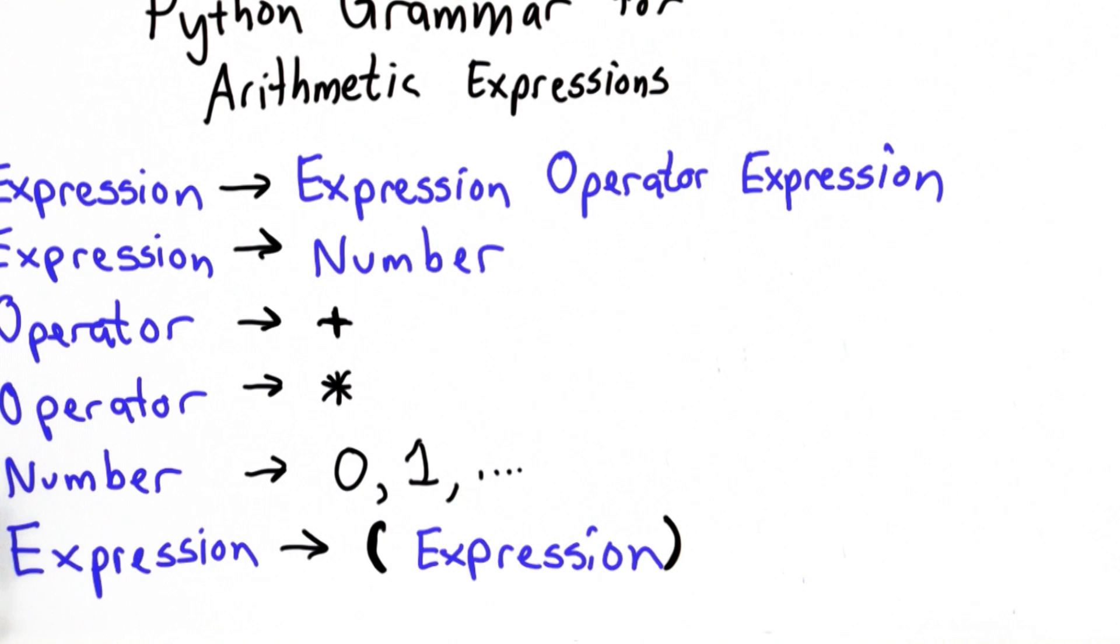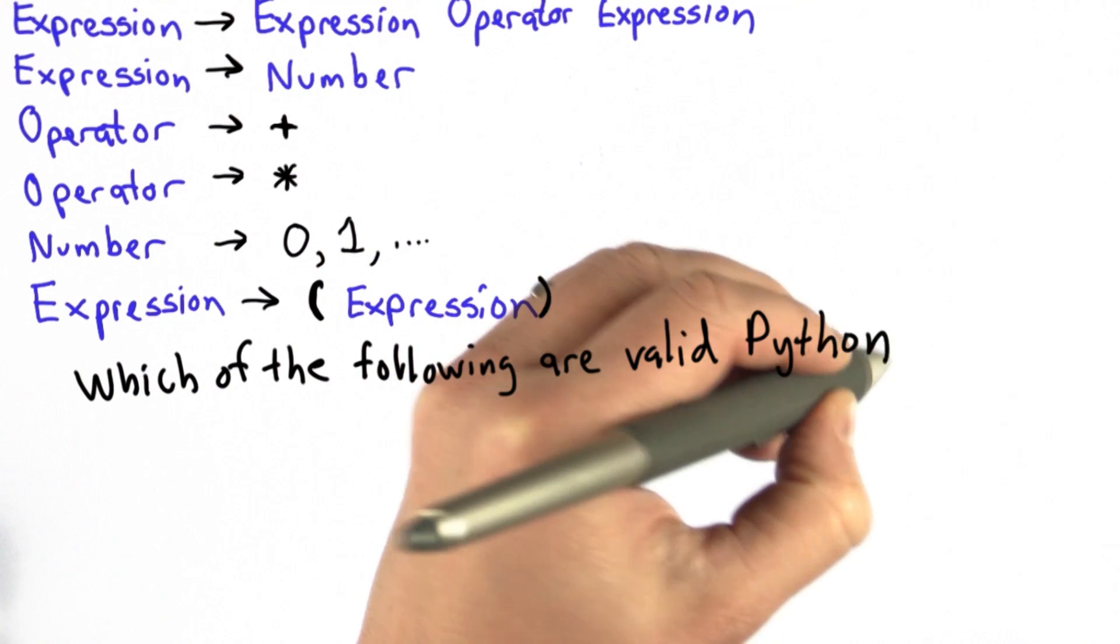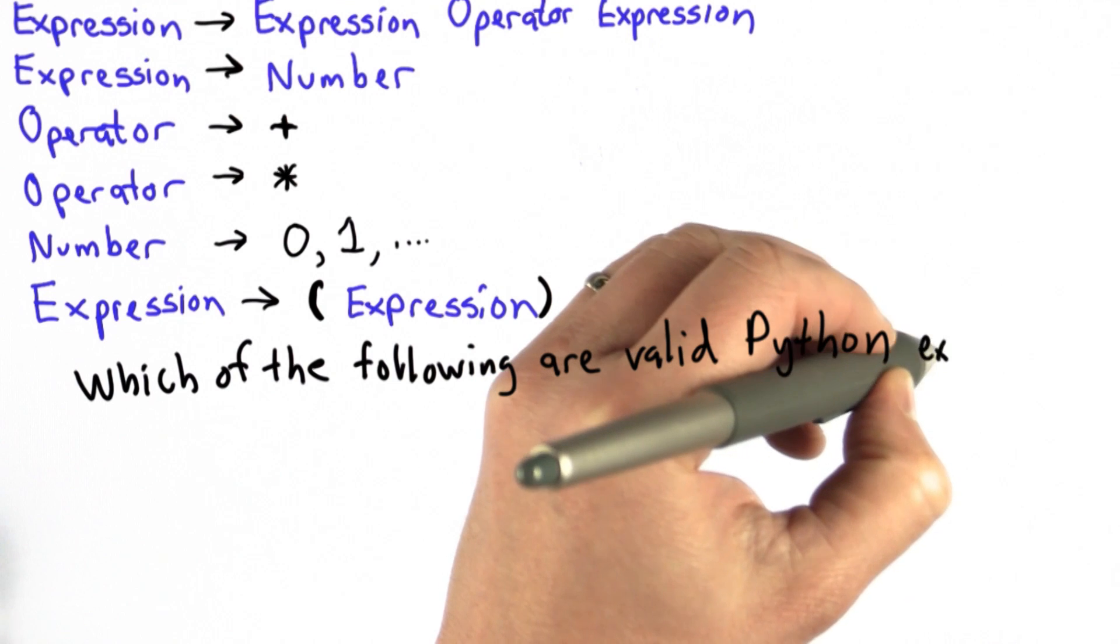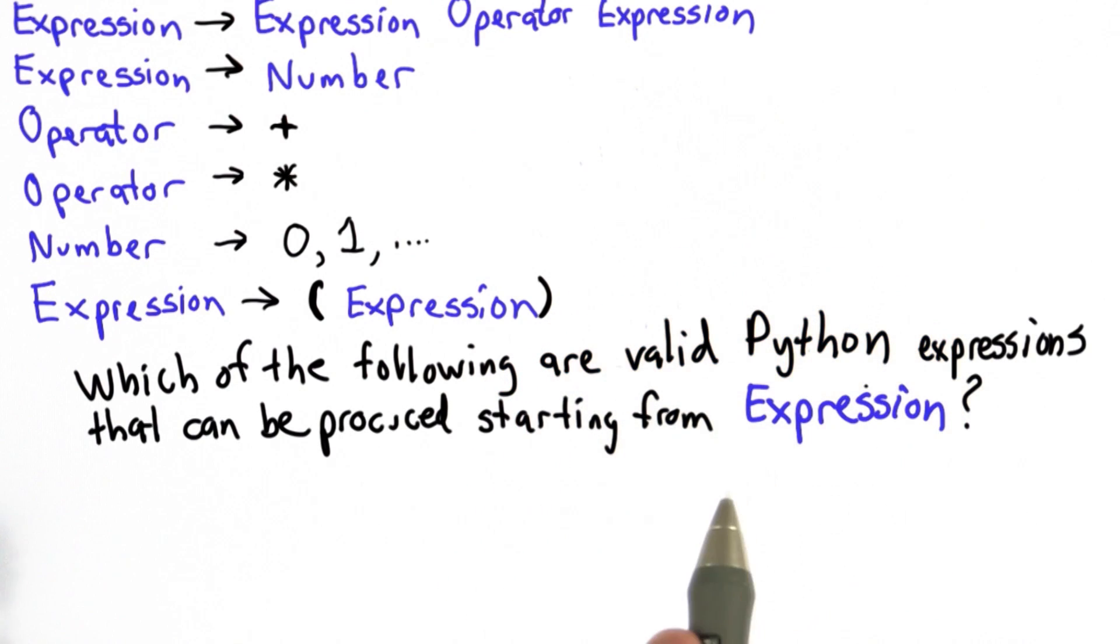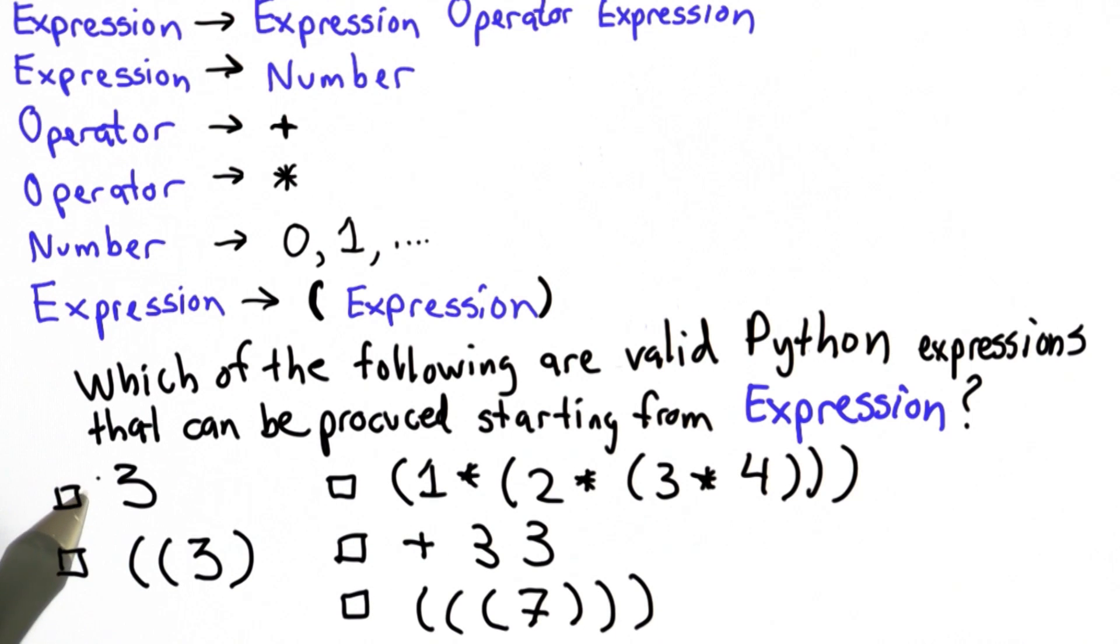We're going to have a quiz to see that everyone understands the grammar. So the question is which of the following are valid Python expressions that can be produced starting from expression using the grammar rules. Here are the choices. There are five possibilities. Check all the ones that are valid expressions that can be produced from this grammar starting from expression. You can try your answers in the Python interpreter if you want, but first see if you can figure it out for yourself which ones are valid.